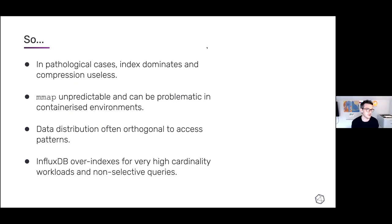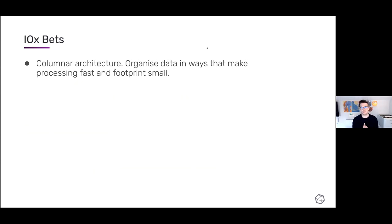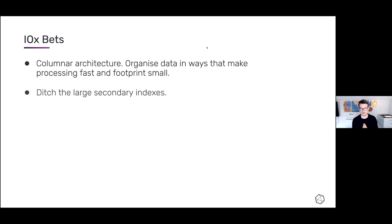Some of the bets we're making in IOx are that with a columnar architecture, and if we organize data in certain ways that make processing faster and keep the footprint smaller, we're going to be better at some of these workloads that InfluxDB doesn't do well at. To do that, we think we're going to have to ditch large secondary indexes. A secondary index is only useful if the cost of reading and maintaining it to find data is less than actually processing the underlying data — that's the only time secondary indexes are a win.